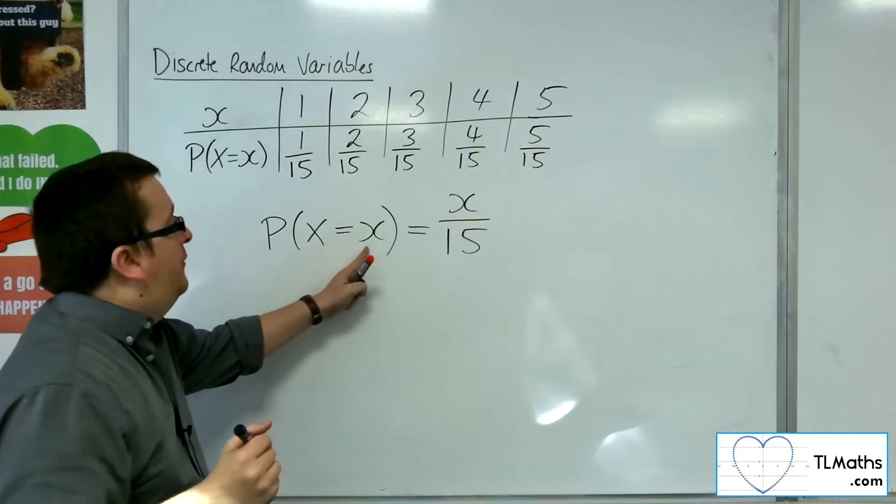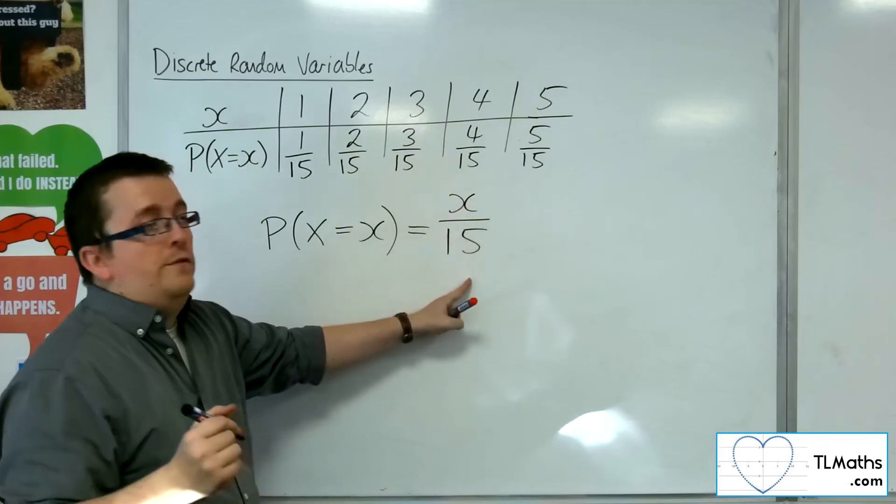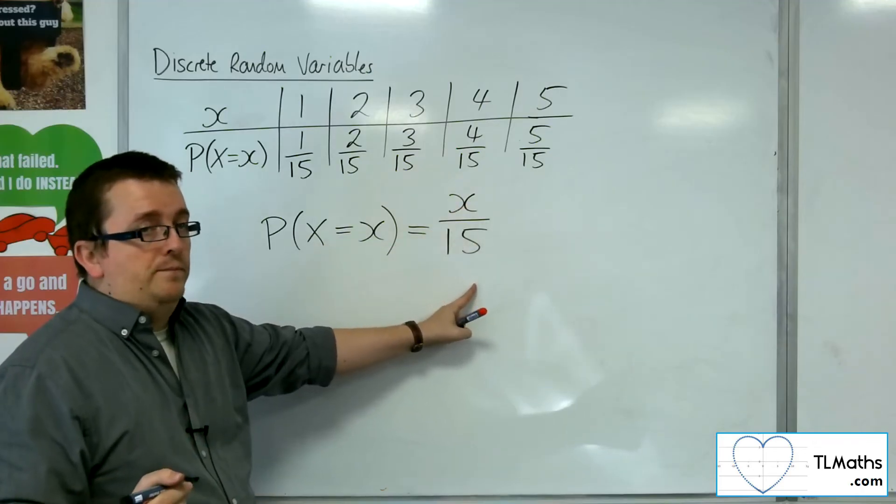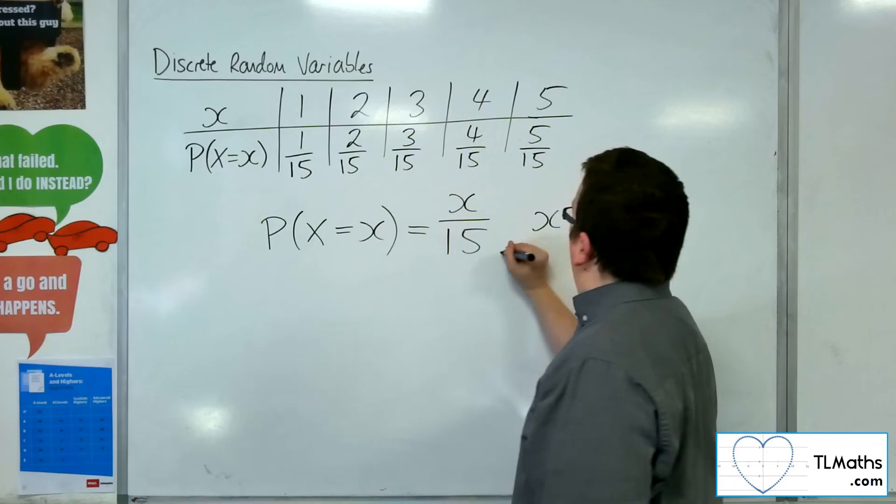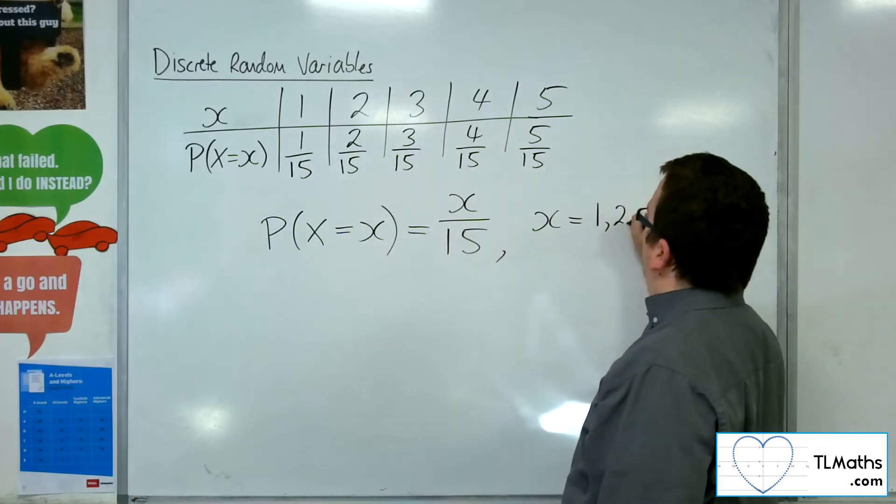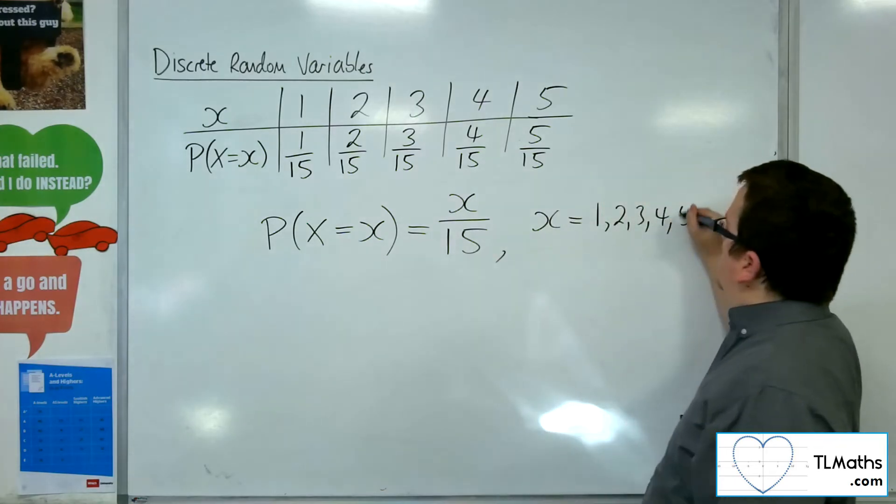So when x is five, it's five over fifteen, that's the probability, where x is equal to one, two, three, four, and five.